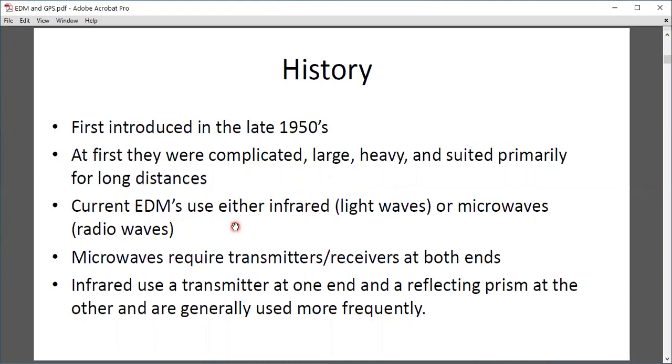Currently, EDM uses either infrared light waves or microwaves (radio waves). Microwaves require transmitters and receivers at both ends. Infrared waves or light waves use a transmitter at one end and a reflecting prism at the other end and are generally used more frequently.